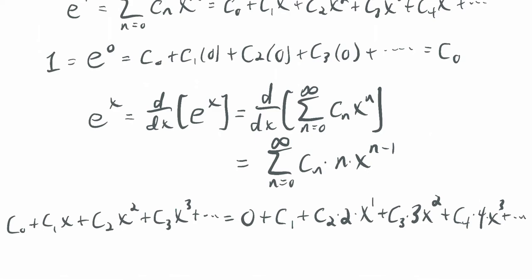Think back to partial fraction decompositions, where we solved for coefficients with two polynomials that were equal. For any x value, the coefficients have to be the same. So the constant coefficient on one side equals the constant coefficient on the other, the linear coefficient equals the linear coefficient, and the quadratic coefficient equals the quadratic coefficient.